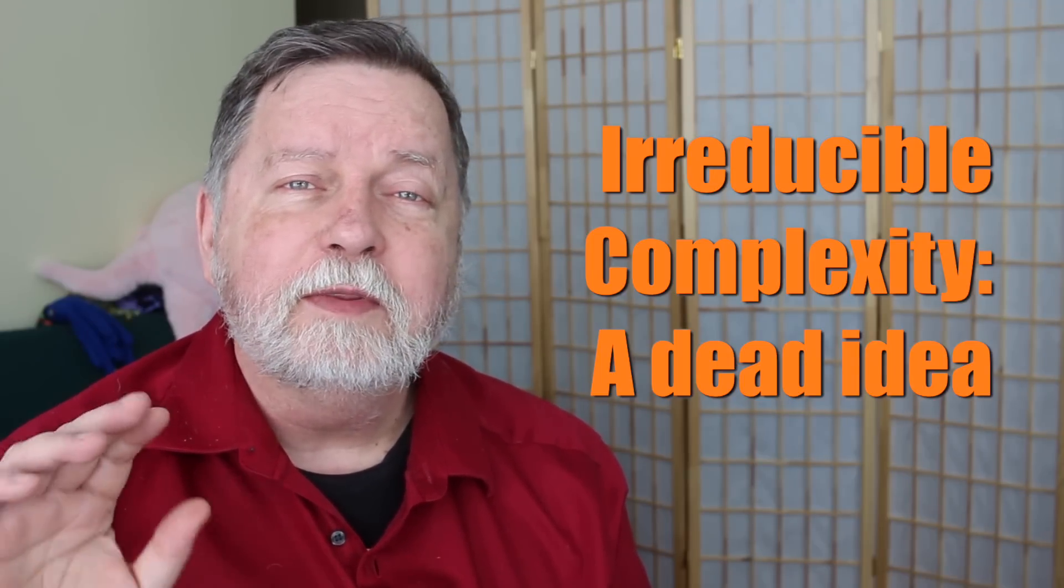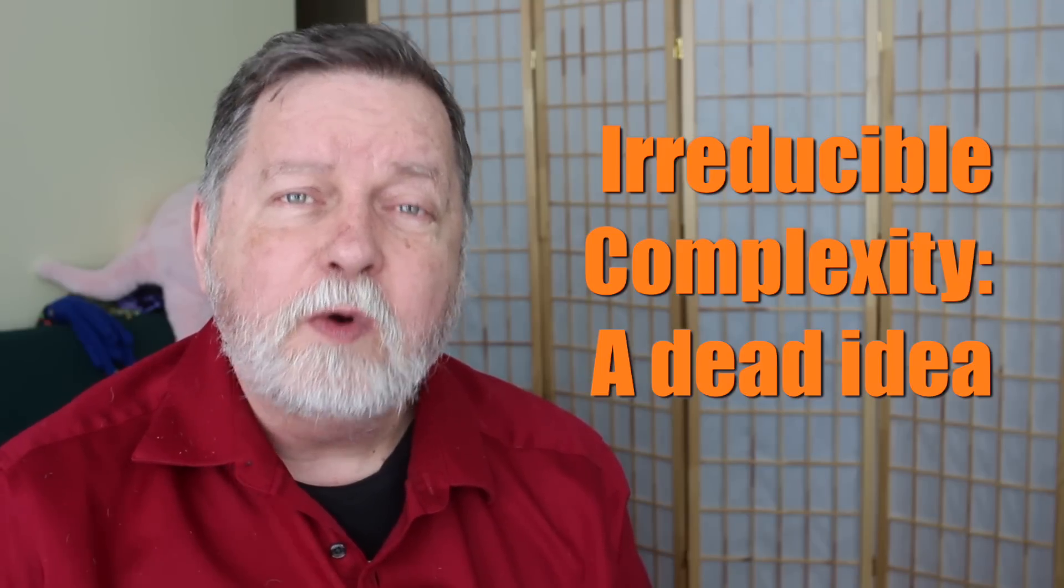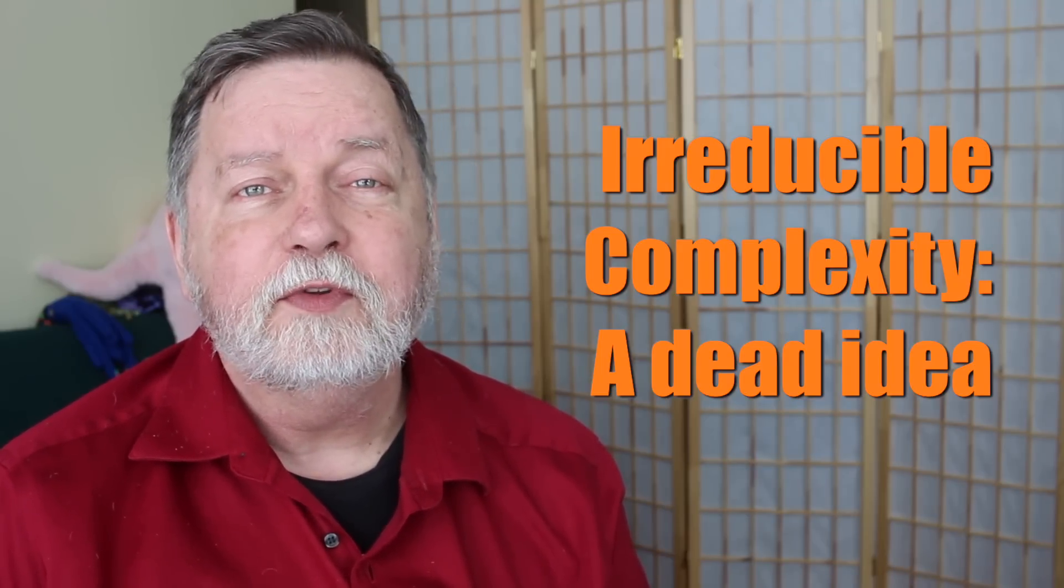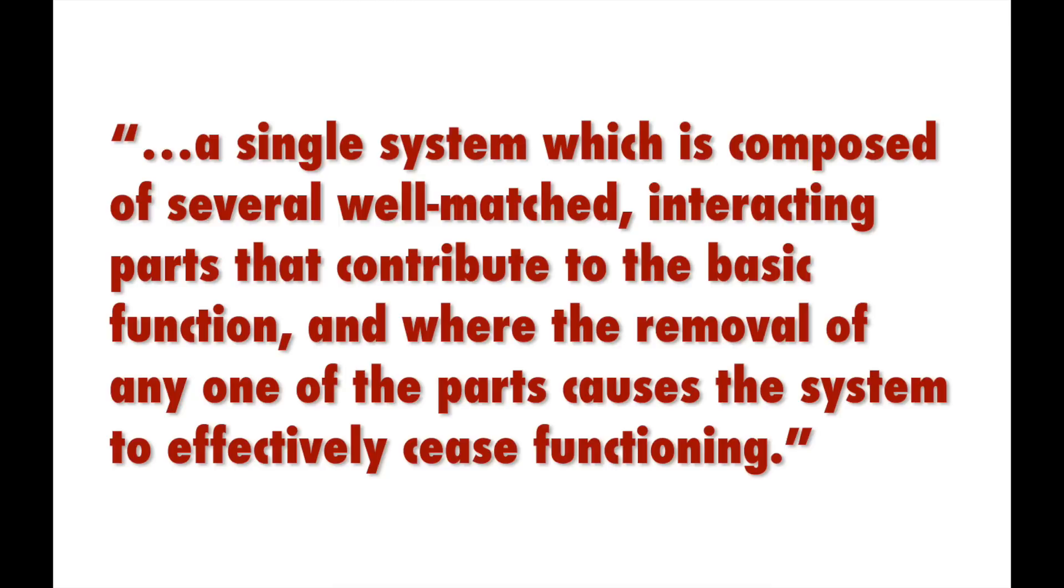Okay, so let's start with Michael Behe's own definition of irreducible complexity. So, he says what it is, is a single system which is composed of several well-matched interacting parts that contribute to the basic function. And where the removal of any one of the parts causes the system to effectively cease functioning.